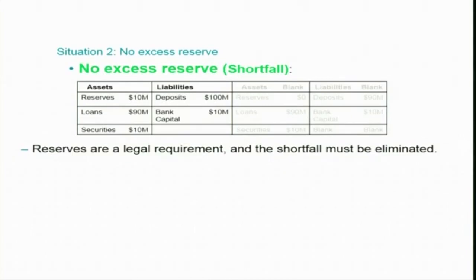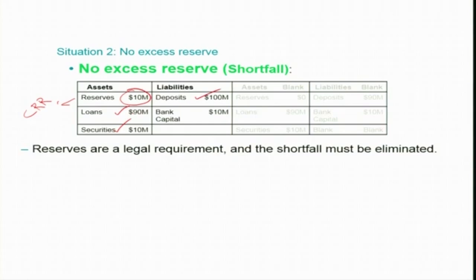Now take the polar opposite scenario: there is no excess reserve at all. Look at this bank's balance sheet again — deposits of $100 million, and if 10% is the required reserve they must keep $10 million as reserves, which is exactly what they are keeping. Loans are $90 million and securities $10 million. Suppose there is a sudden deposit outflow of $10 million. What will this bank do?